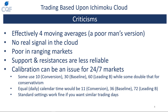Lastly, calibration can be a major issue for 24/7 markets — the Ichimoku was built for traditional markets. Many traders use 10 periods for the conversion line, 30 for the baseline, and 60 for leading span B; some double that for conservatism. To match stock numbers to actual calendar time, you would need 11 periods for the conversion line, 36 for the baseline, and 72 for leading span B on a daily timeframe. That said, if you just want to keep the traditional trading-day calibration, the standard settings work fine.